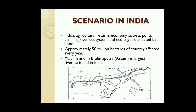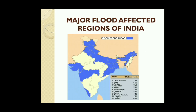Now the scenario in India. India's agriculture-based economy, society, polity, planning, river ecosystem and ecology are all affected by flood. Approximately 50 million hectares of the country are affected every year. Majuli island in the Brahmaputra, Assam, is the largest riverine island in India, and it is notably the best example of good paddy crop after annual flooding in the Brahmaputra.